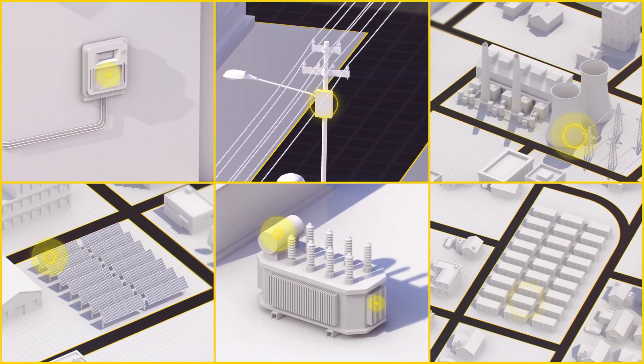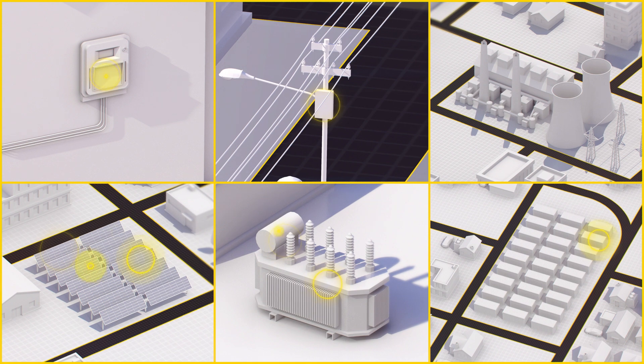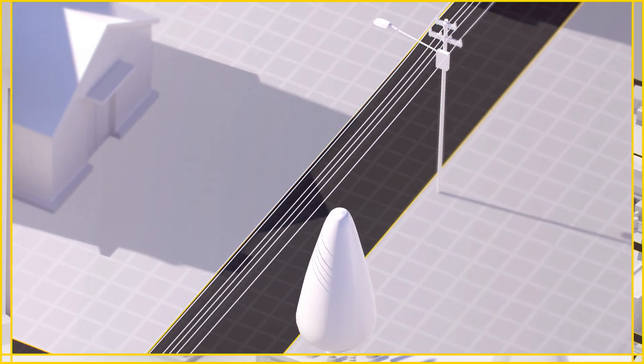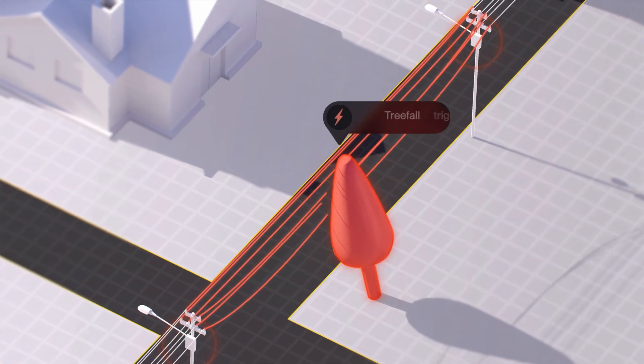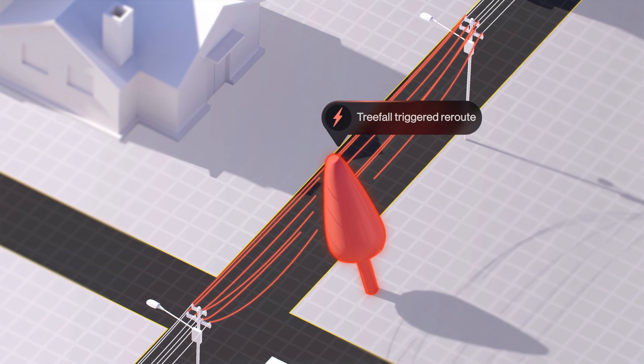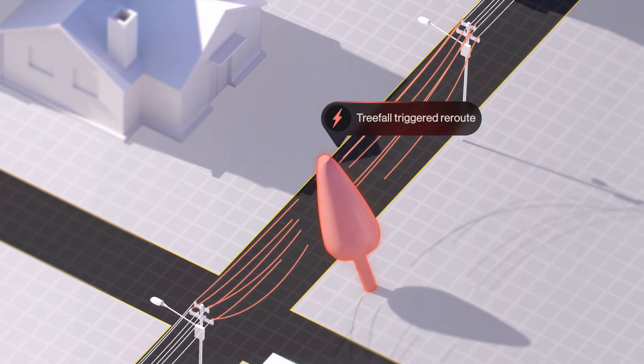The grid's decisions will be powered by thousands of sensors, feeding millions of data points. This will allow it to detect problems and reroute power instantly, often before anyone even notices.